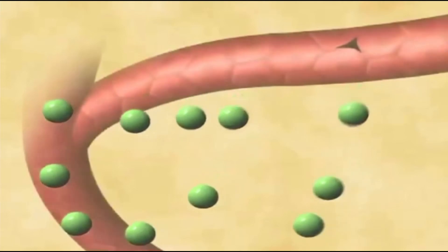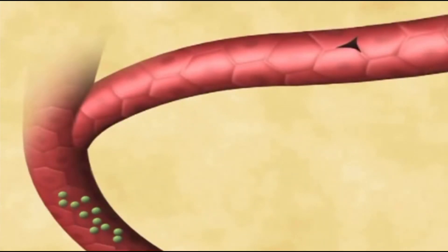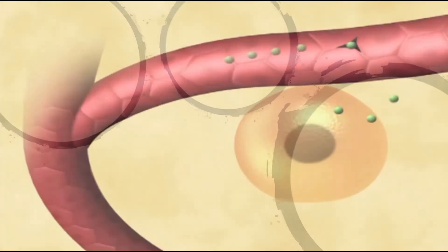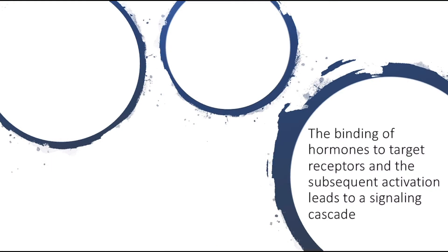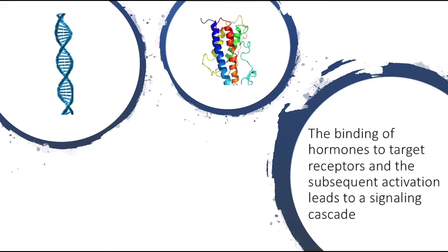Hormones are produced and secreted by glands when stimulated, which will then move through the blood until they come in contact with specific receptors on or in target cells. The binding of hormones to target receptors and the subsequent activation leads to a signaling cascade that ends with a desired effect, be it activation of a set of proteins or gene expression.